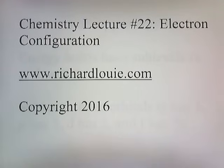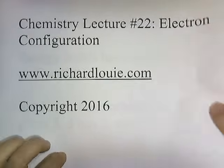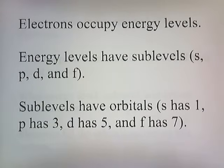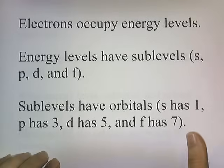Chemistry Lecture Number 22: Electron Configuration. Electrons occupy energy levels. Energy levels have sub-levels: S, P, D, and F. Sub-levels have orbitals. The S sub-level has one orbital, P has three orbitals, D has five orbitals, and F has seven.